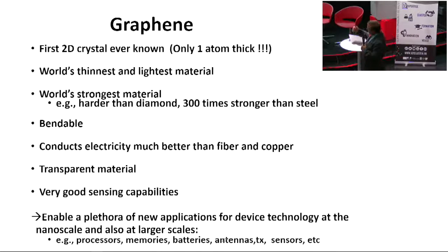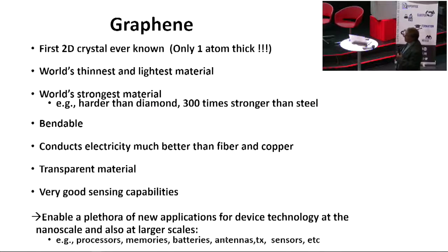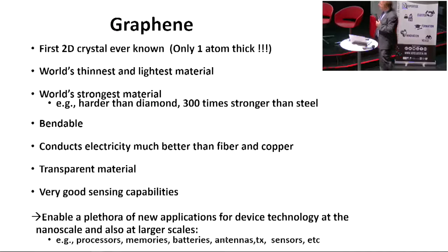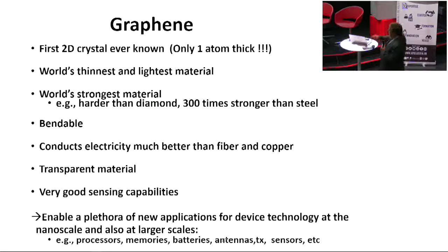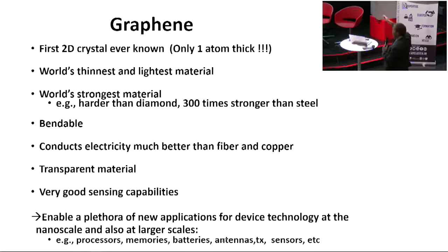Graphene has excellent characteristics: it is the first 2D crystal ever known to mankind, only one atom thick, the world's thinnest and lightest material, the world's strongest material — harder than diamond and 300 times stronger than steel. It is bendable, conducts electricity much better than fiber and copper, is transparent, and has very good sensing capabilities. These properties make it useful for developing new IT devices like processors and memories.